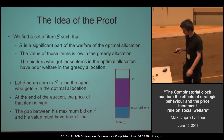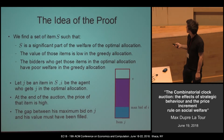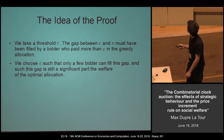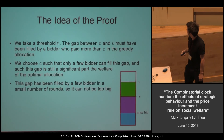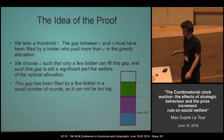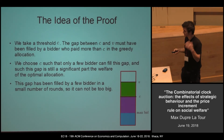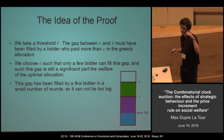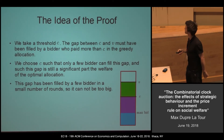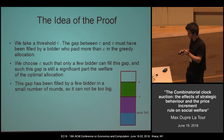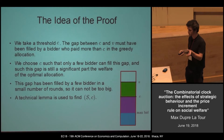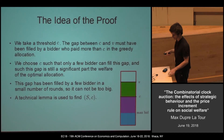The gap must have been filled by some other agents. If we take a threshold C, the gap between C and V must have been filled by a bidder who paid more than C in the greedy allocation — otherwise they would have won the item. The tricky part is to choose C high enough so that only a few bidders can fill the gap, but low enough so the gap is still large enough. The argument is that the gap has been filled by only a few bidders in a small number of runs, so it cannot be too big. The technical part of the proof is to find such a set S and such a threshold C.